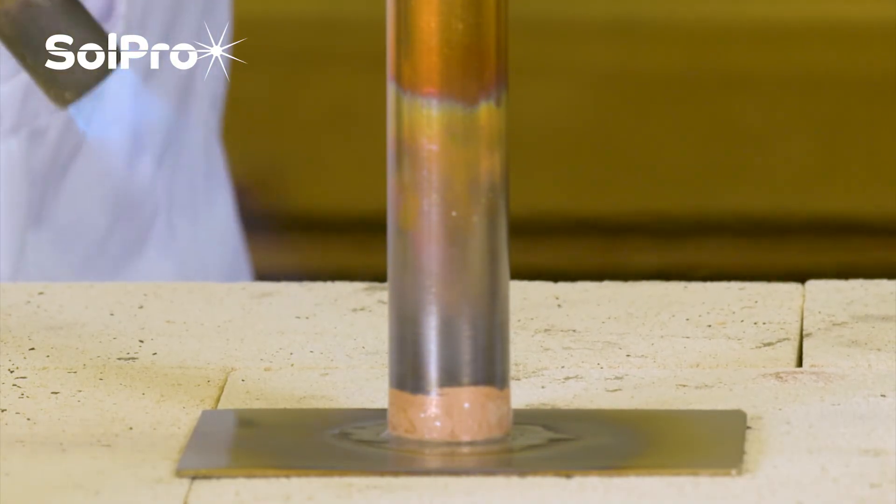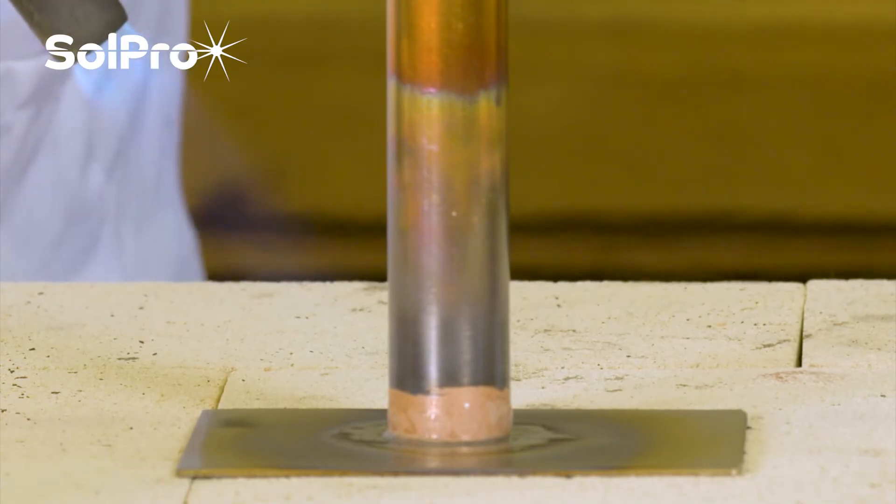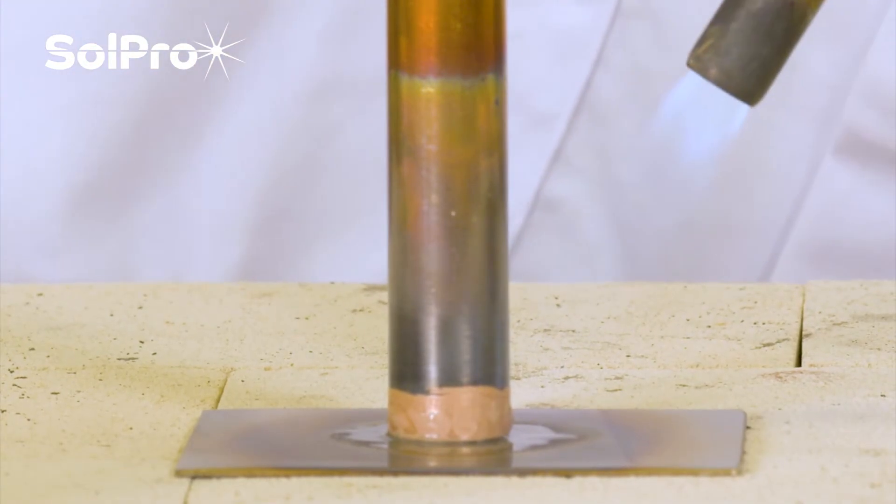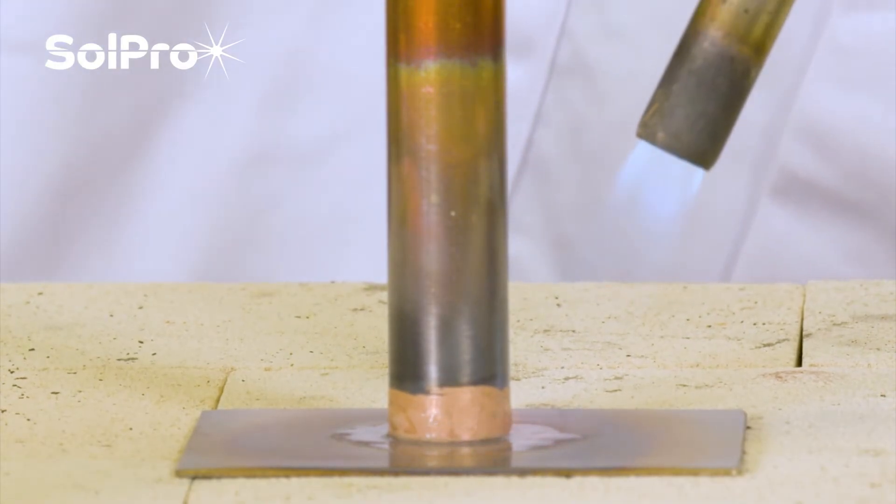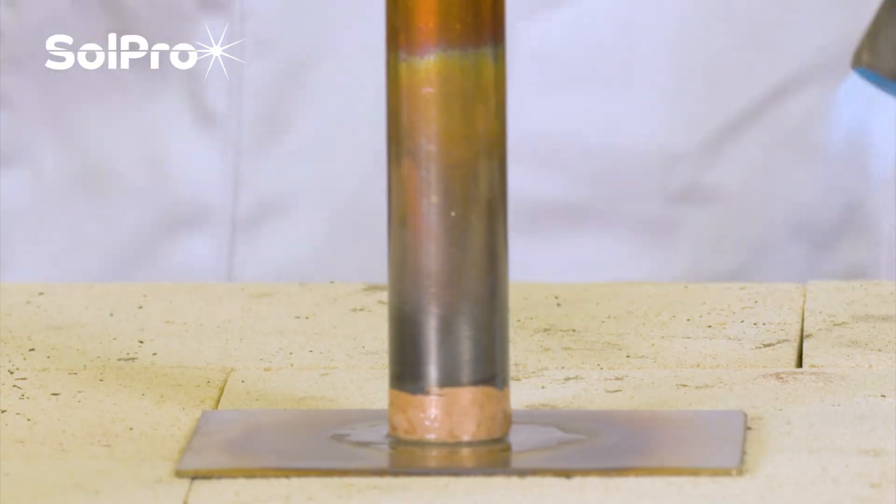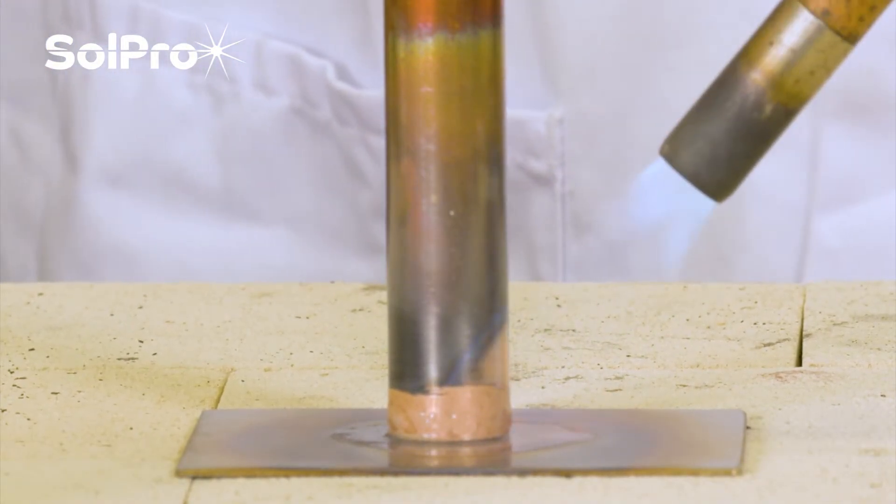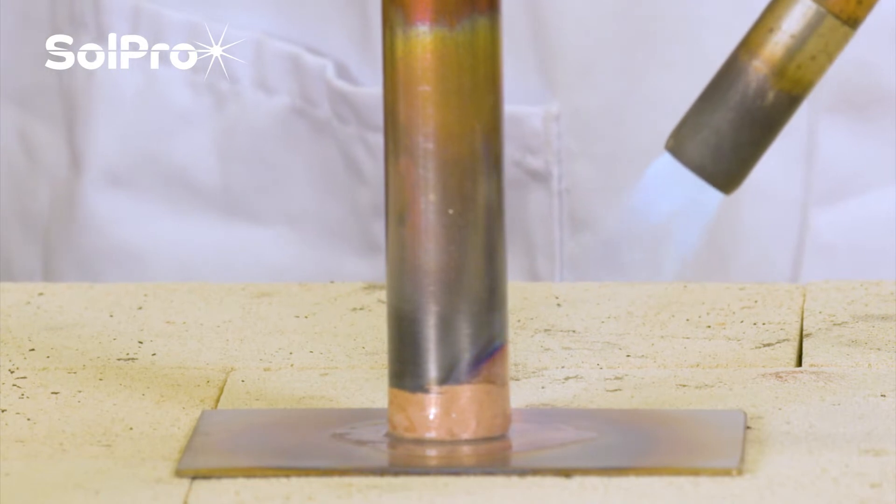I'm going to keep applying the heat. This being copper is a very good conductor of heat, so it's actually conducting the heat away from the joint up the pipe. We need to keep making sure we apply plenty of heat.